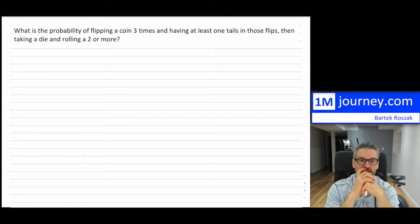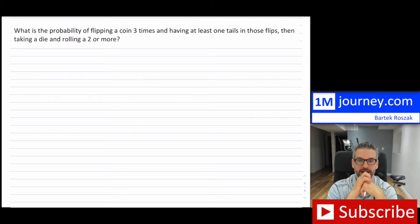So in this video, we're gonna take on this particular example of probability of flipping a coin three times and having at least one tails in those flips, then taking a die and rolling a two or more. So what is the probability of that?